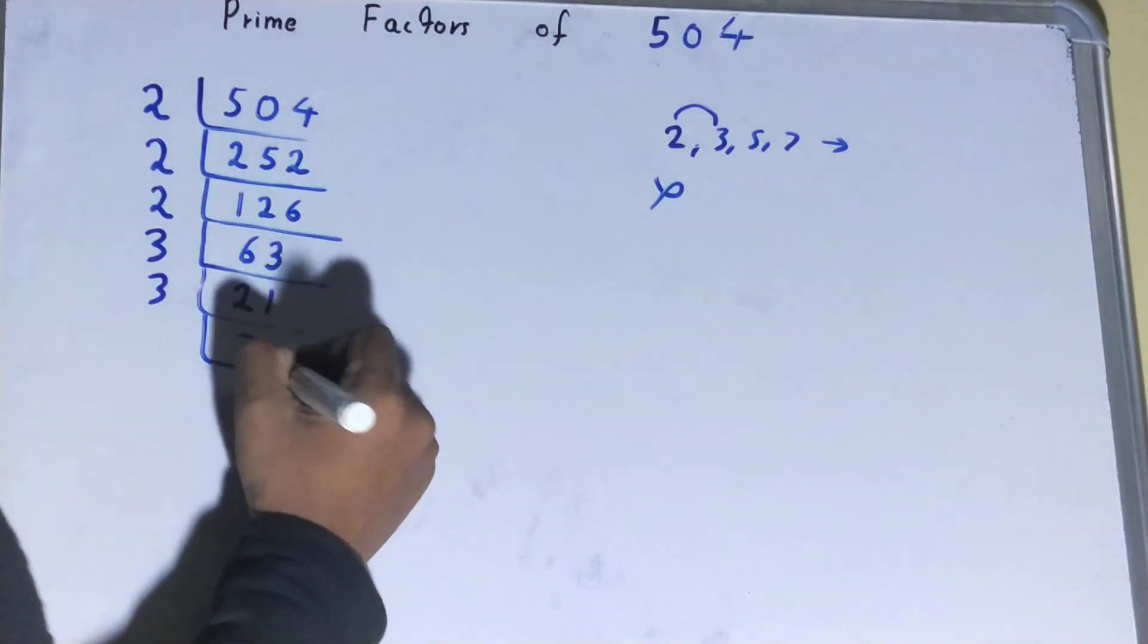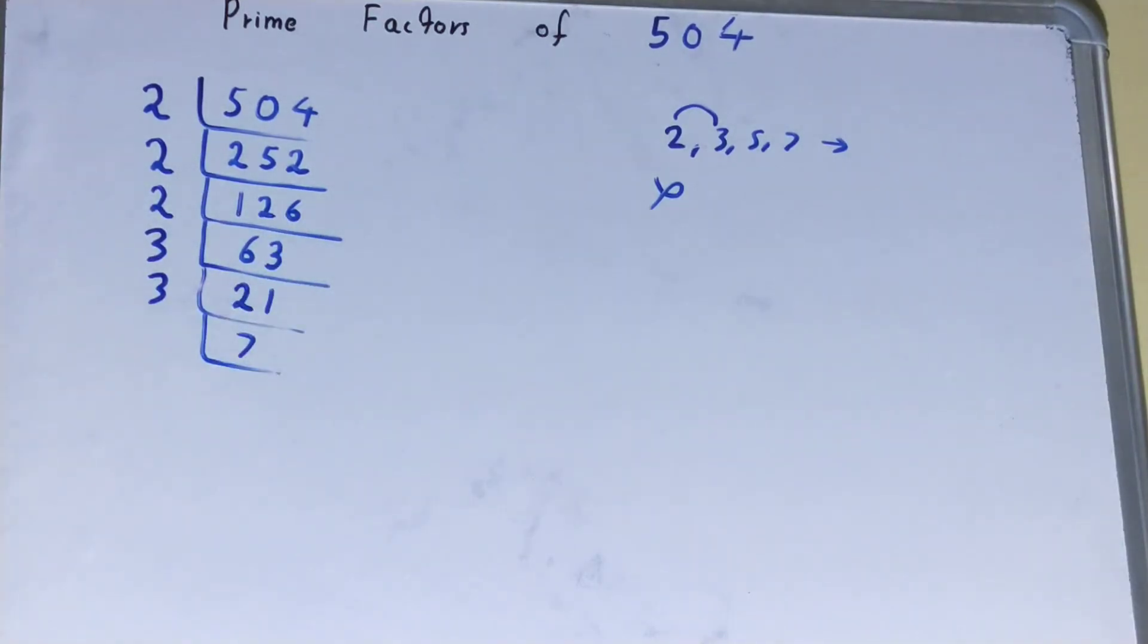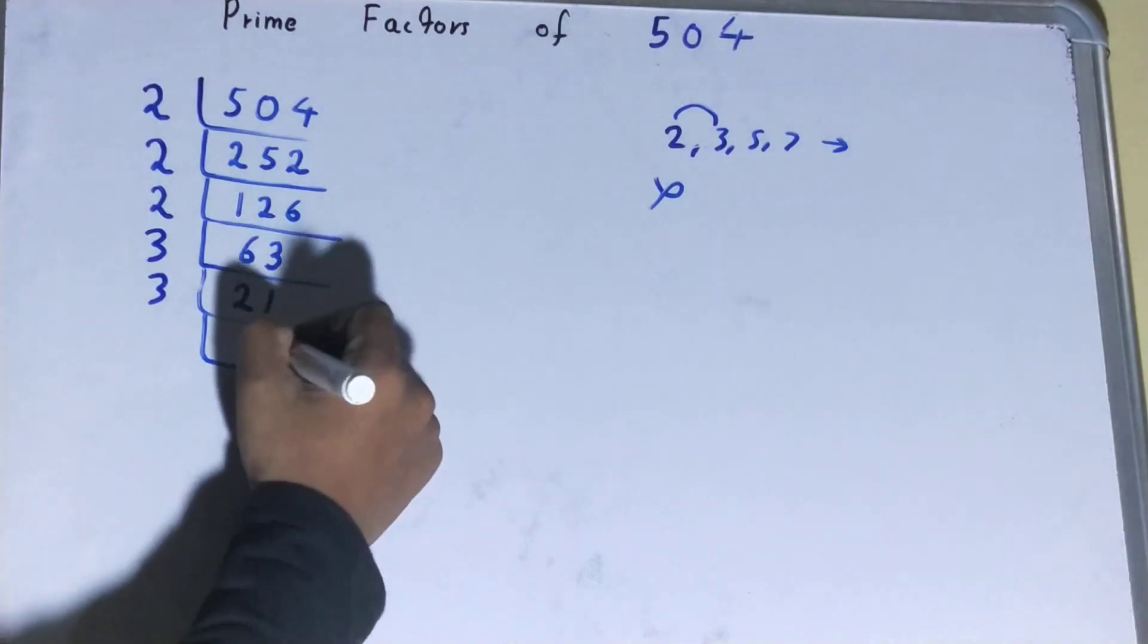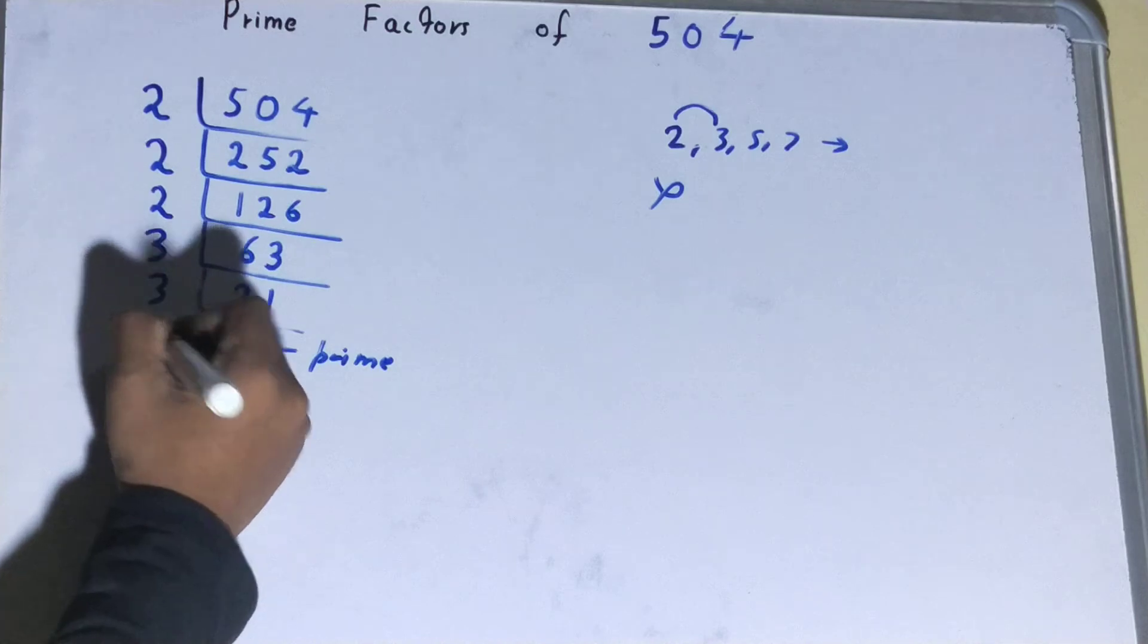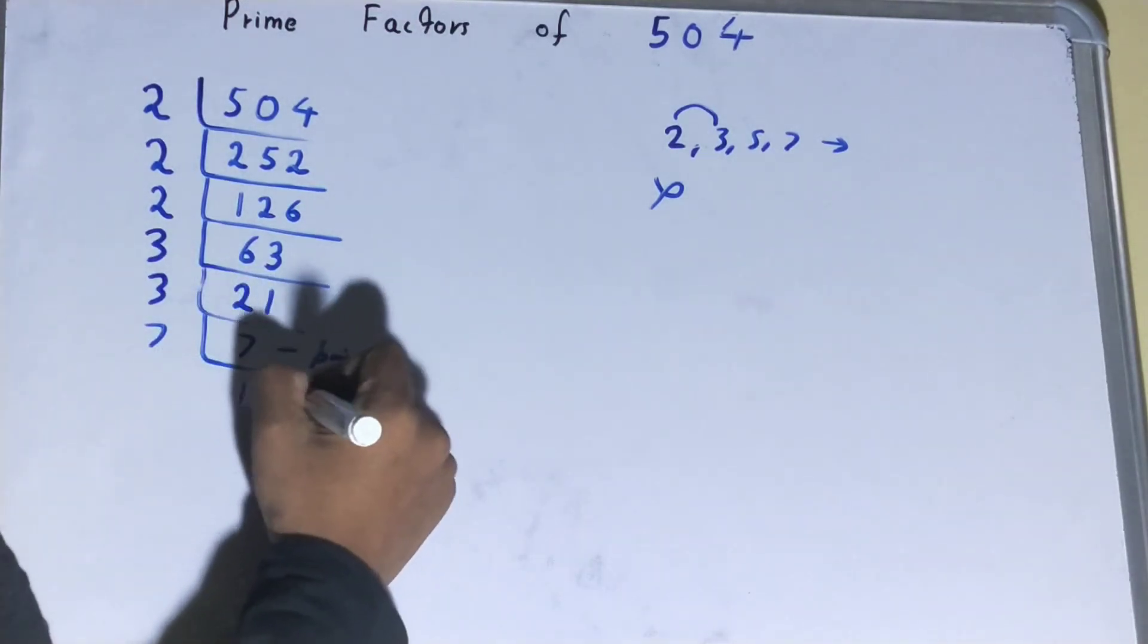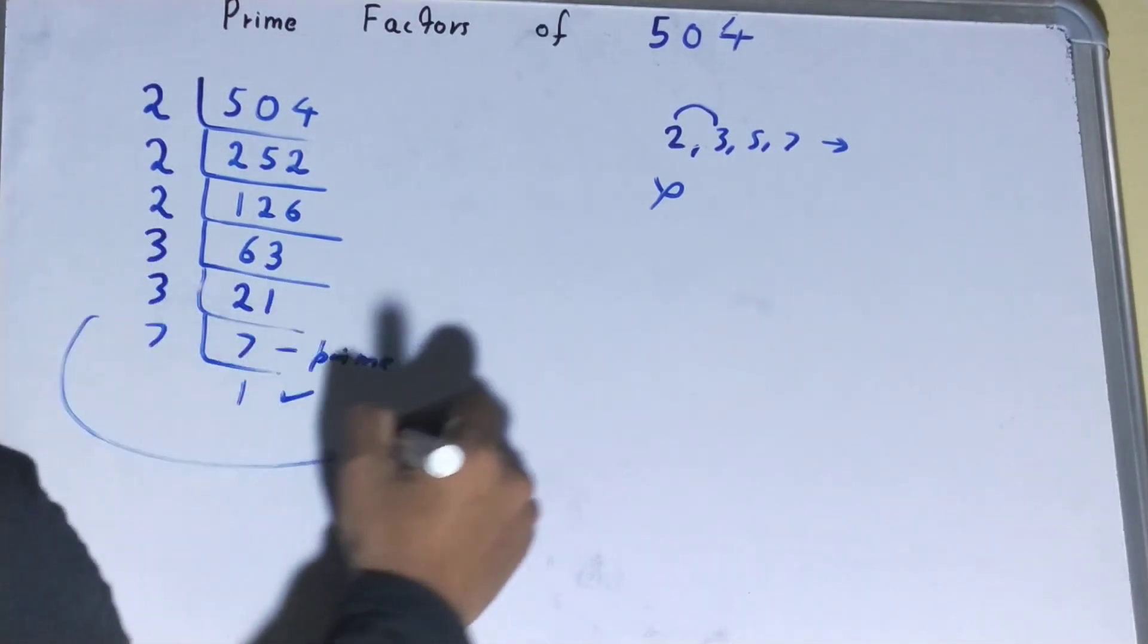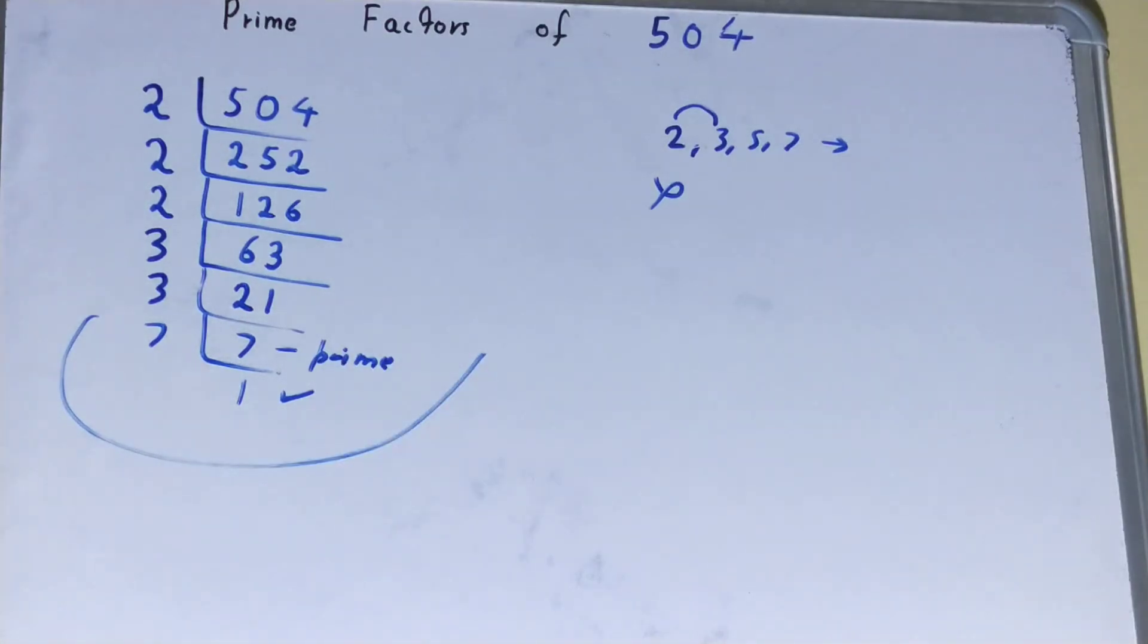Now 7 is not divisible by 3, because 7 is itself prime. So to divide this 7, you need 7 on the left-hand side, and when you do so, you'll be left with 1. Once you're left with 1, the work is done, and whatever you have on the left-hand side will be the prime factors of the number 504.